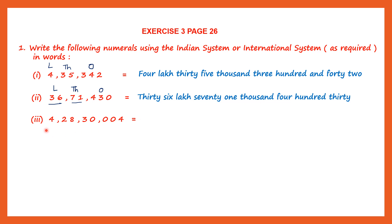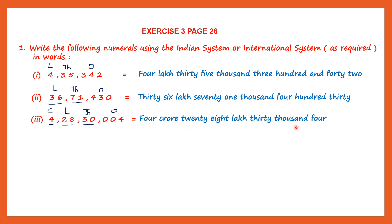Next one, the third one. Again, let's see if it's the Indian system. We have three digits, comma, then two digits, comma, two digits, comma — so this is the Indian system where we have commas after two digits. The places are ones, tens, hundreds, thousand, ten thousand, lakh, ten lakh, and crore. Ones, tens, hundreds in the ones period; thousands and ten thousands in the thousands period; lakh and ten lakh in the lakhs period; and four is in the crores period. So now let's read it: four crore, 28,30,004.